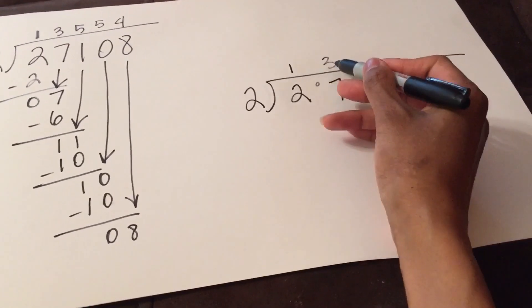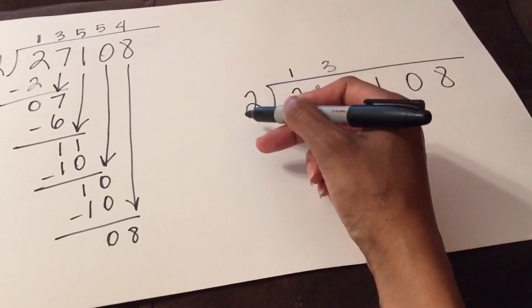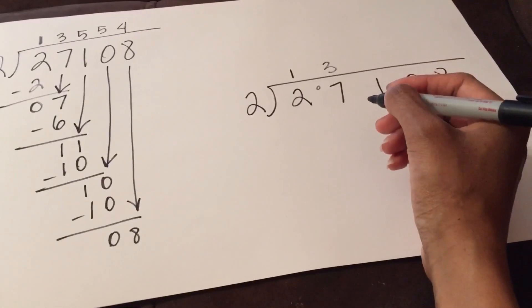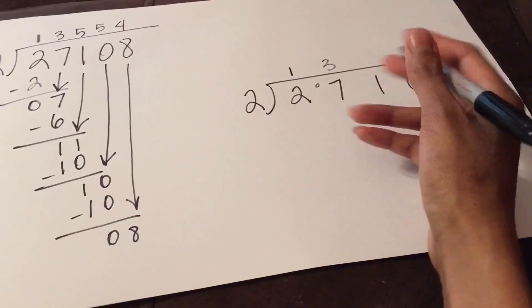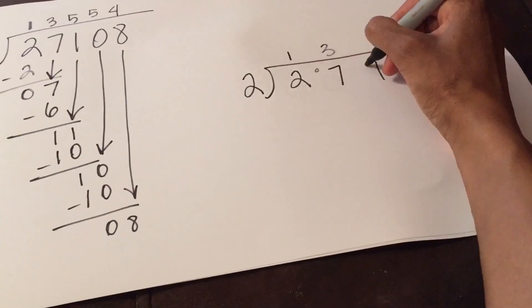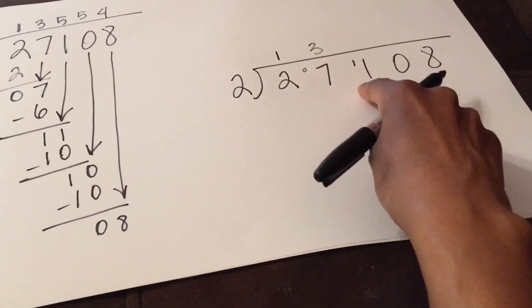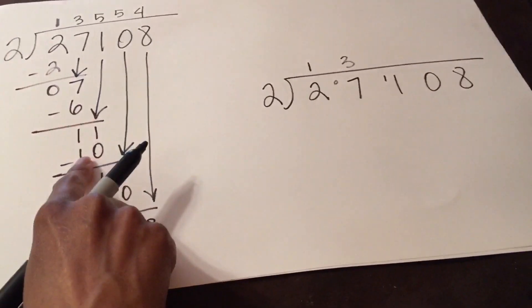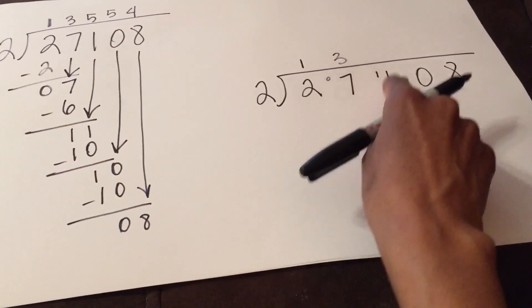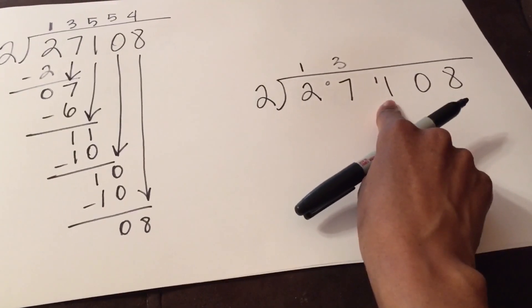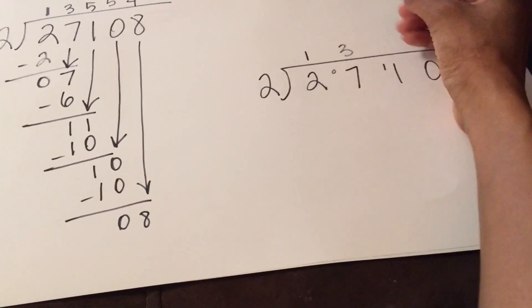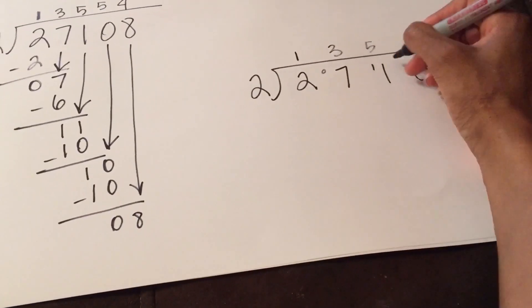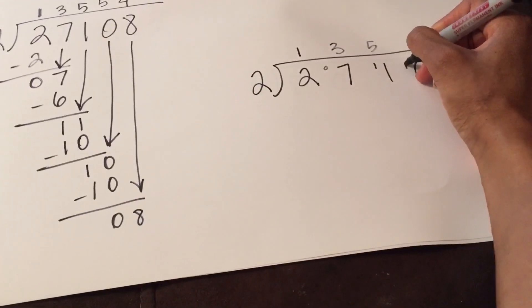The answer to that is three times. I take three times two which is six, meaning two went into seven three times with a product of six. I take the difference in my head — six and seven have a difference of one — and put that one in front of the next digit. Now I have eleven. This is just the same steps as before: two into two, then two into eleven, except I'm subtracting in my head and putting the difference in front of the next number.